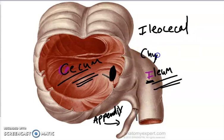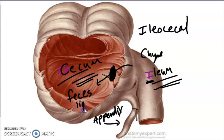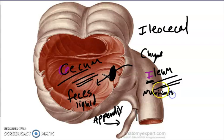Remember, it is chyme right here. As soon as it goes through the ileocecal valve to the cecum, we change its name to its final name, which is feces. This is still in a liquid state — it's 100% liquid. In theory, we have absorbed all the nutrients we need from the small intestine. There are still salts and other things here, but we call it feces from this point on.